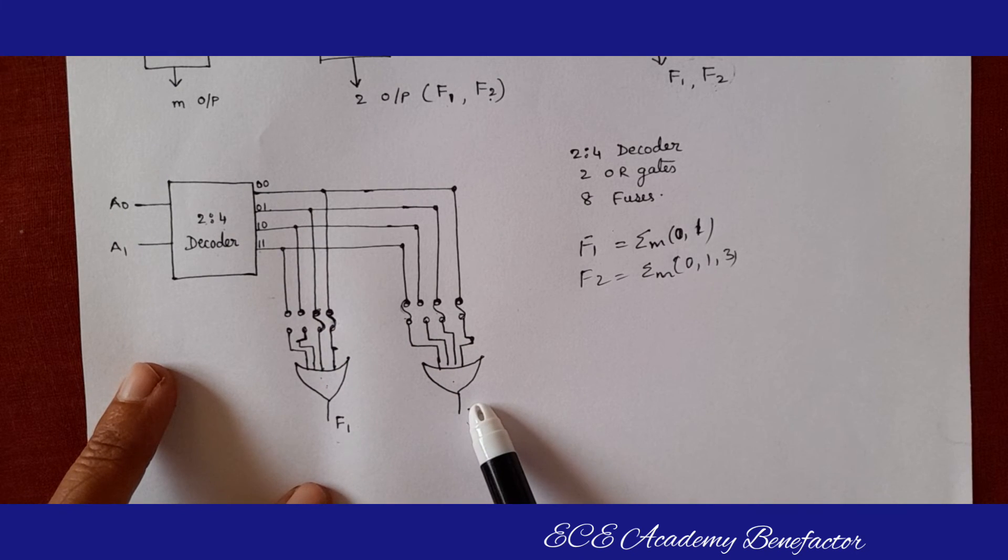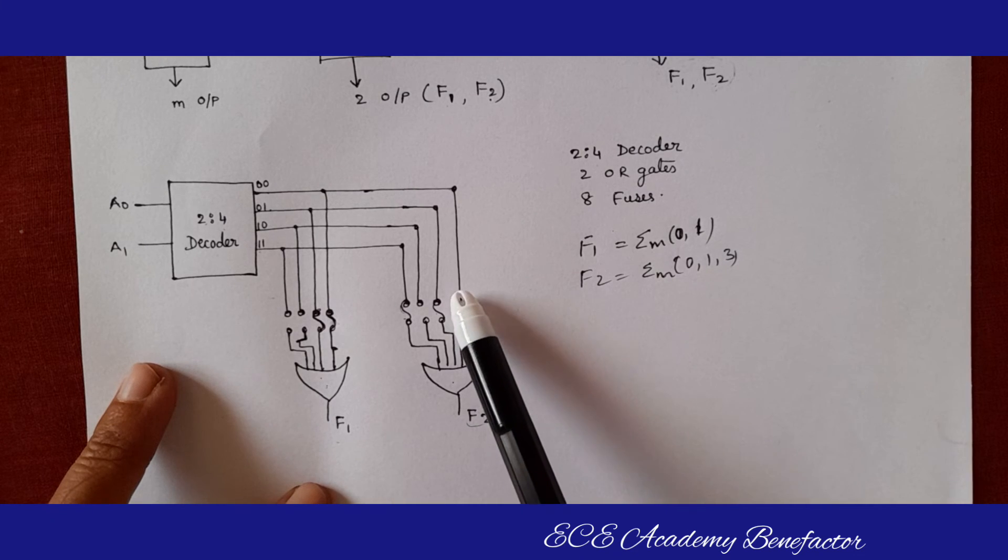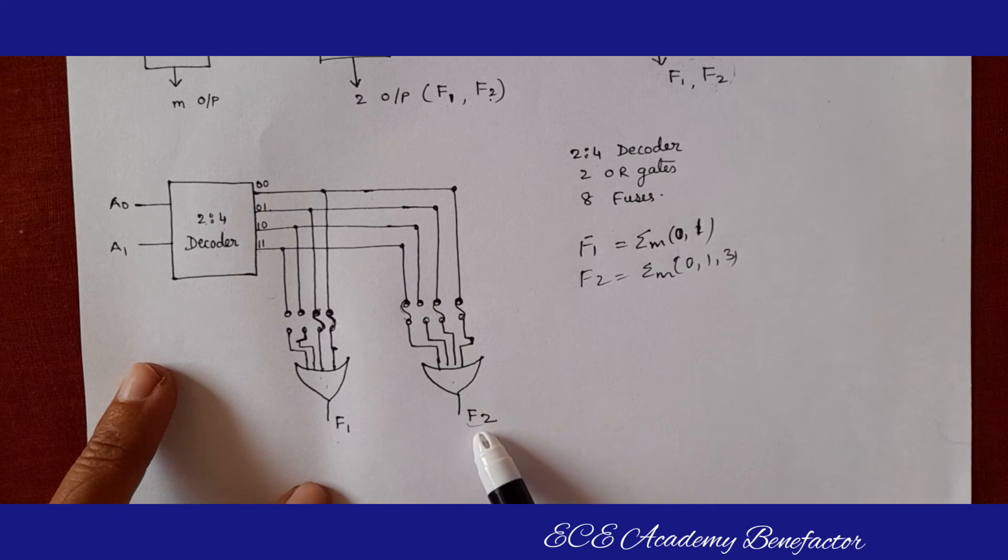Now coming to f2, which fuses we need to connect: 0, 1 and 3. So we have connected 0, 1 and 3 to get the f2 output.